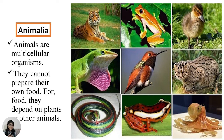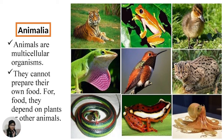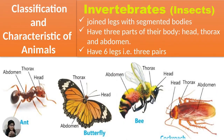Animals: Animals are multicellular organisms. They cannot prepare their own food inside their body — they depend on plants or other animals. Classification and characteristics of animals: Invertebrates include insects, which have jointed legs with a segmented body of three parts — head, thorax, and abdomen — and six legs arranged in three pairs.